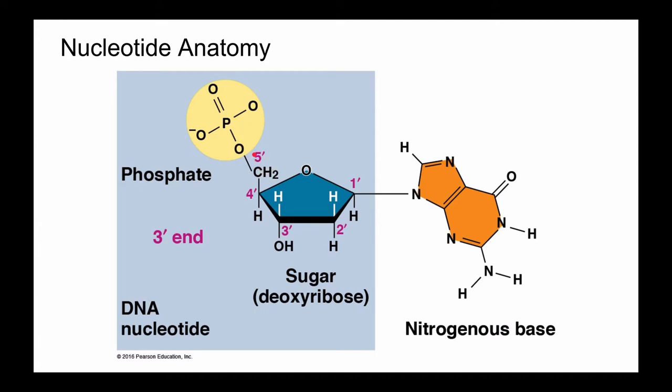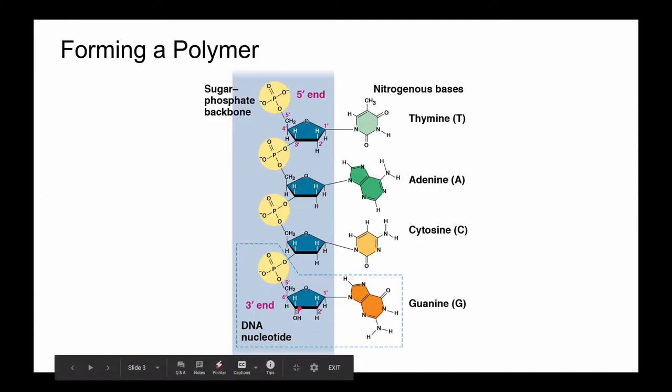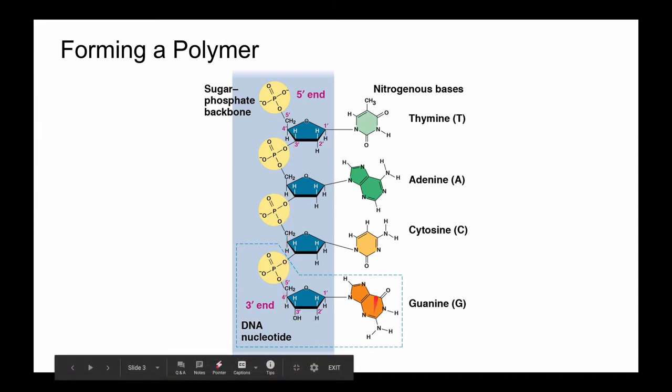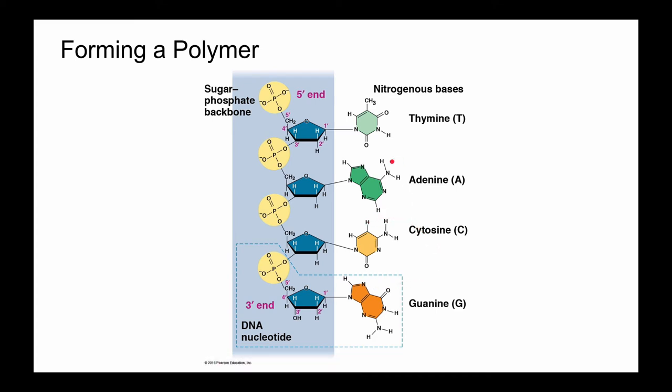And then the fifth carbon attaches to the phosphate group. So they call this the five prime end of the nucleotide. And then you're going to hear about the three prime end, and that's right down here. So let's take a look how this all connects. Here's the three prime end and the five prime end, and here's the phosphate group. And so the phosphate of this nucleotide connects with the next nucleotide at its three prime end. And then moving along, here's the next five prime carbon attached to the phosphate and into a three prime carbon, five to three.